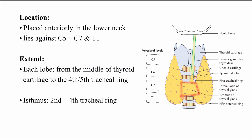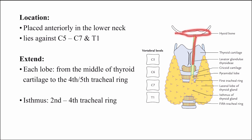The isthmus extends from the 2nd to the 4th tracheal ring. The pyramidal lobe is attached above to the hyoid bone by a fibromuscular band called the levator glandulae thyroideae.